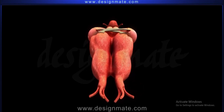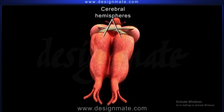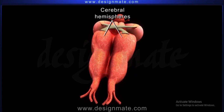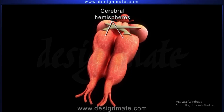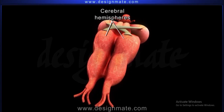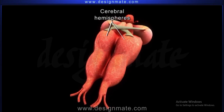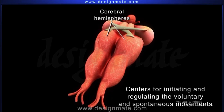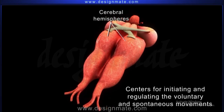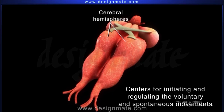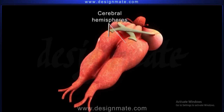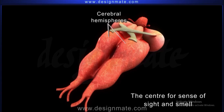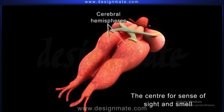Behind the olfactory lobes, the two cerebral hemispheres are seen, connected with each other by transverse bands of nerve fibers. These cerebral hemispheres possess the centers for initiating and regulating the voluntary and spontaneous movements in frogs. The cerebrum is also the center for the sense of sight and smell.